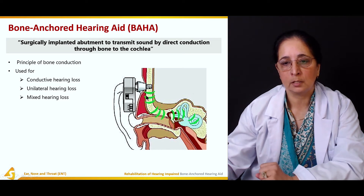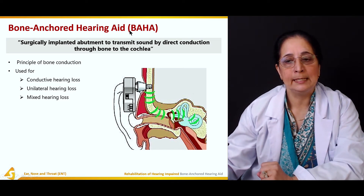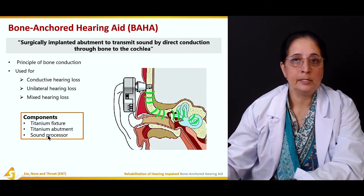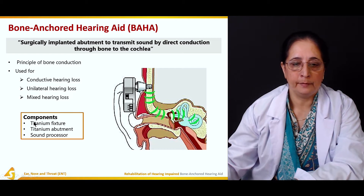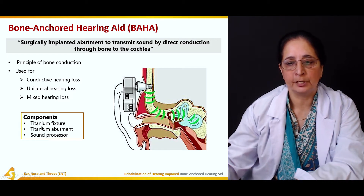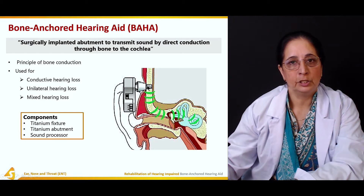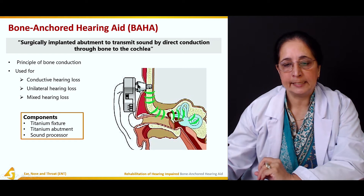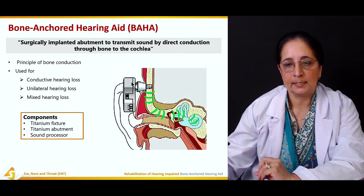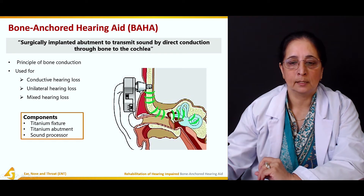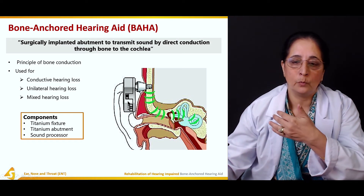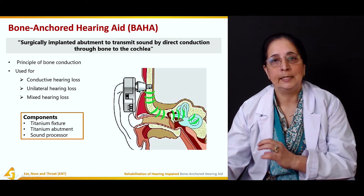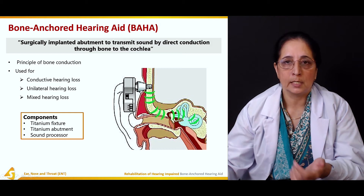This is the bone anchored hearing aid, also known as BAHA. The components include a titanium fixture fixed in the bone, a titanium abutment, and a sound processor that processes sound waves and transfers them to the bone, which then conducts them directly to the cochlea for sound production.